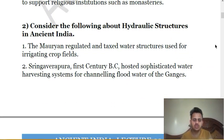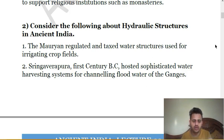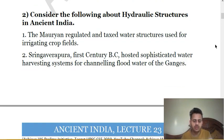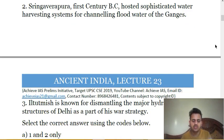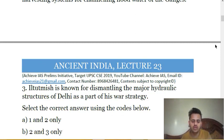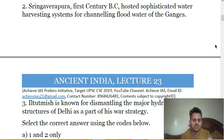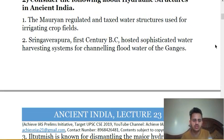Second question: consider the following about hydraulic structures in ancient India. First, the Mauryans regulated and taxed water structures used for irrigating crop fields. Second, Shringaverapura, 1st century BC, hosted sophisticated water harvesting systems for channeling flood waters of the Ganges. Third, Iltutmish is known for dismantling major hydraulic structures of Delhi as part of his war strategy. We have to choose the correct statement.